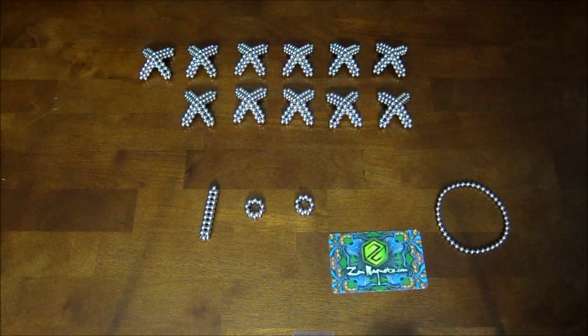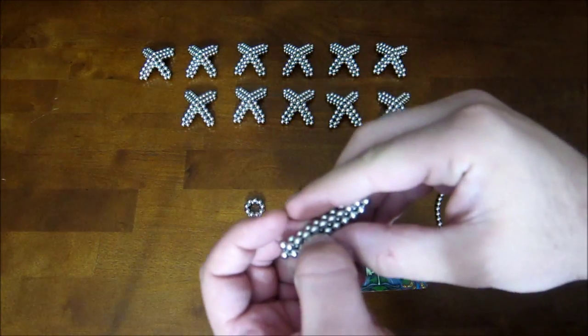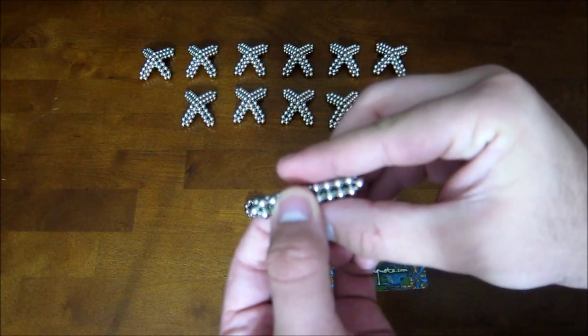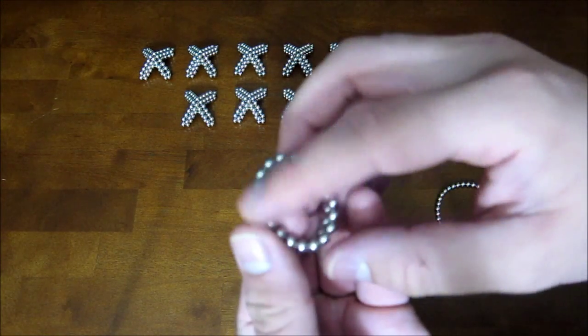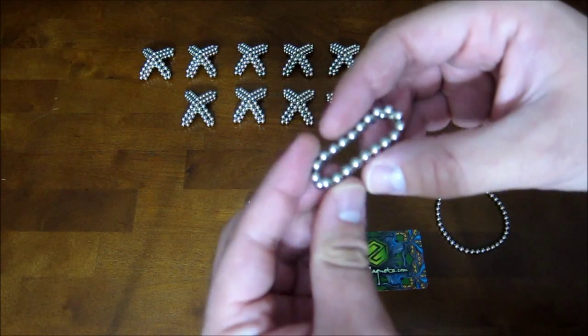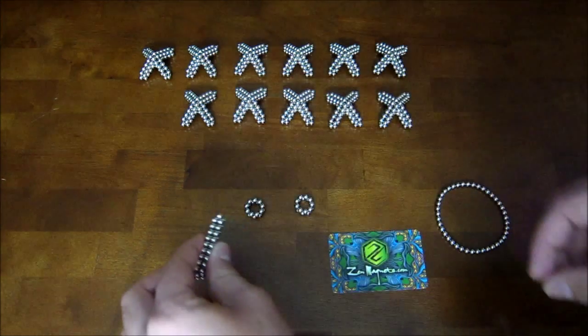The way that you make them is first you need a long straight piece which is made out of two stacked rings of 20 magnets. And you just flatten that out into a long straight piece.